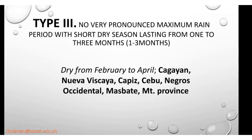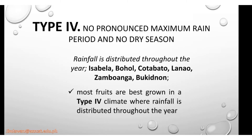For Type 3, they have no very pronounced maximum rain period, with a short dry season which lasts from one to three months — dry from February to April. The places are Cagayan, Nueva Vizcaya, Capiz, Cebu, Negros Occidental, Masbate, and Mountain Province.